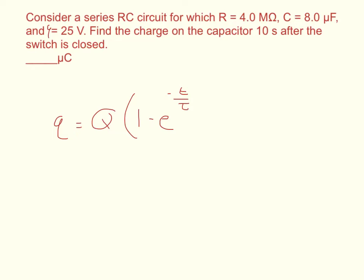We've got to find a few things. Tau is equal to R times C, Q is equal to E times C, T is equal to 10 seconds.